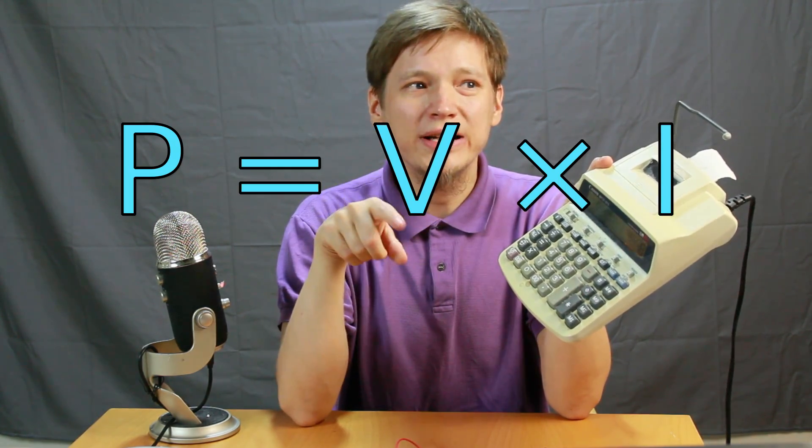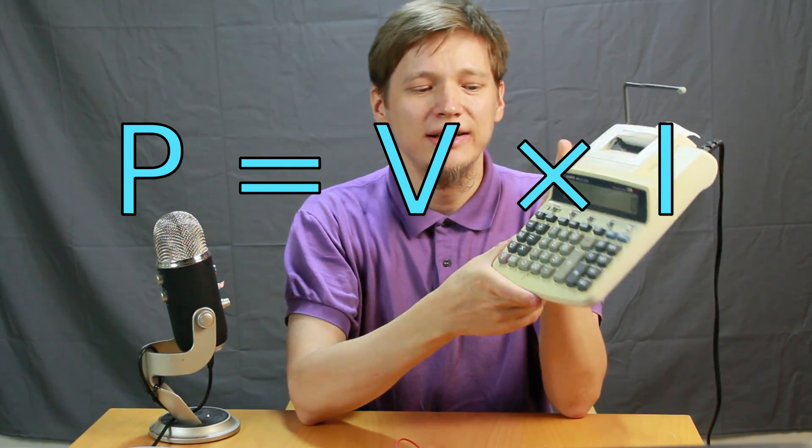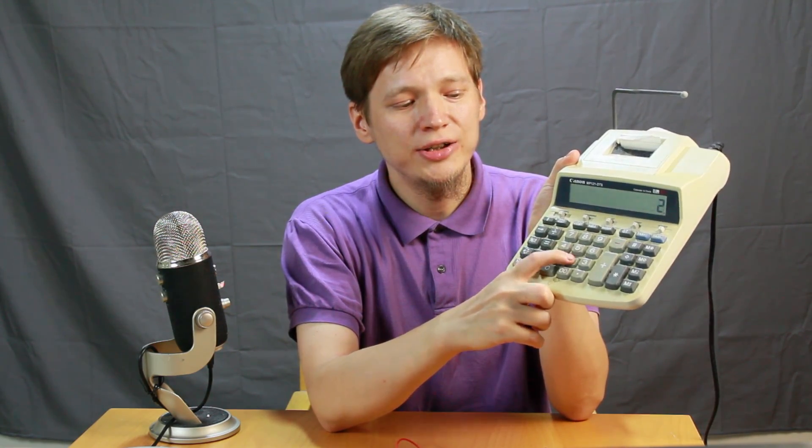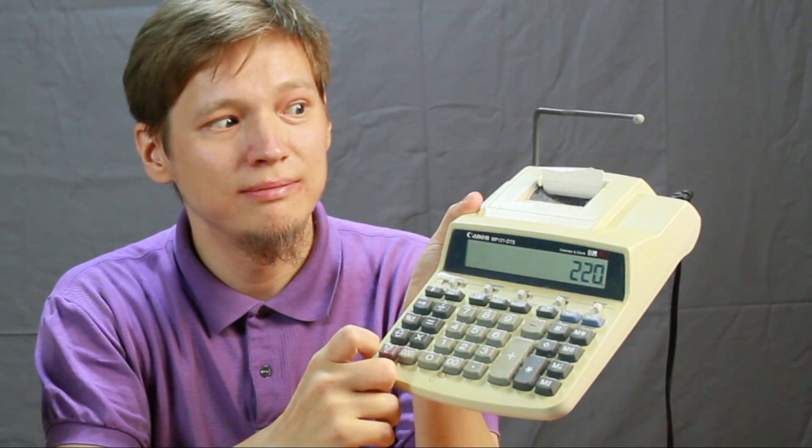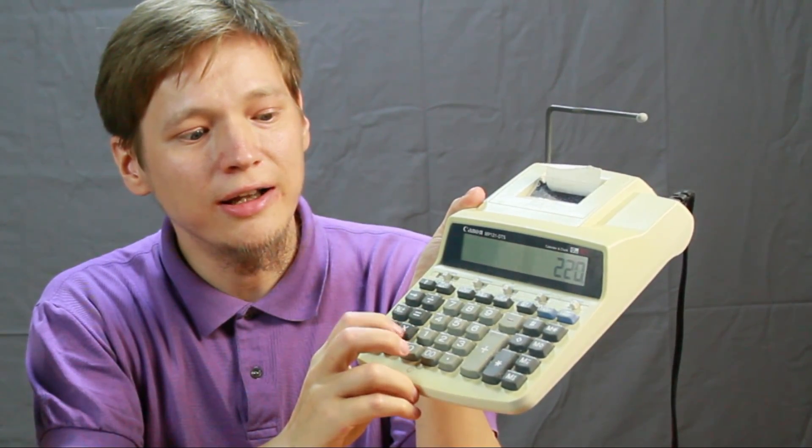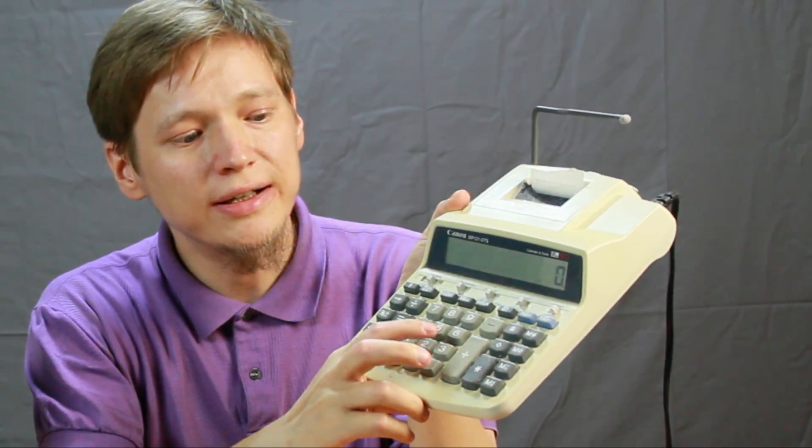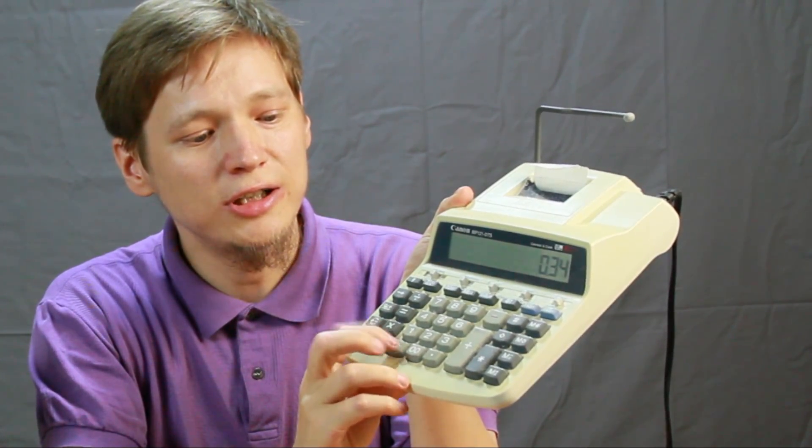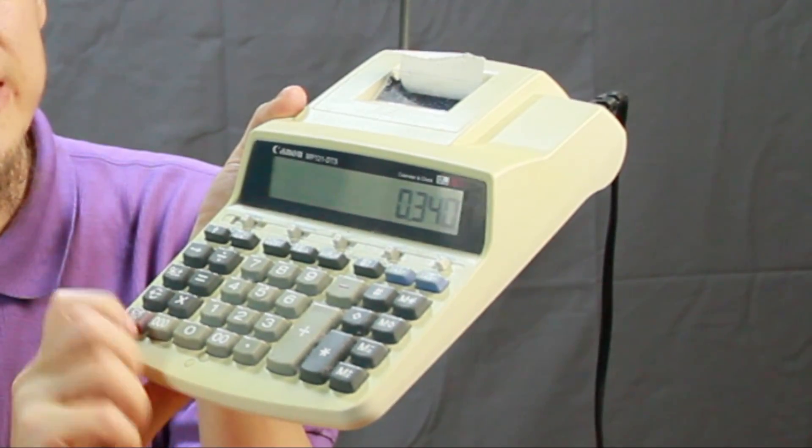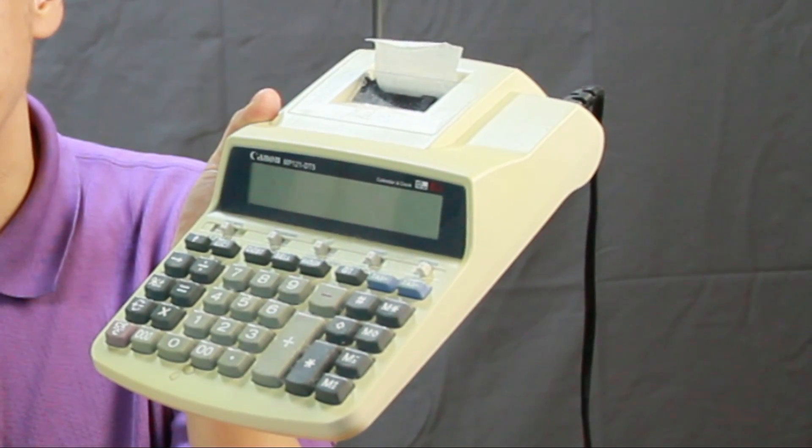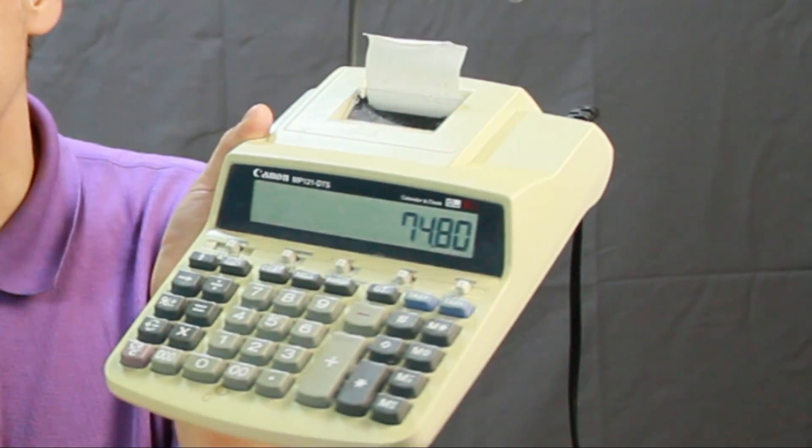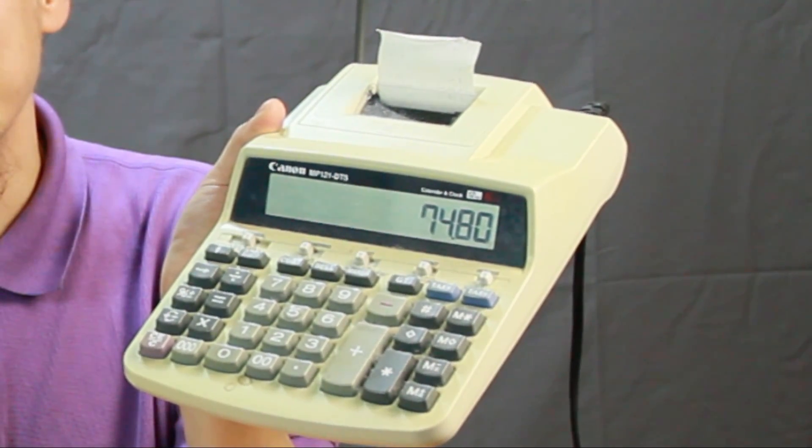If we take the well-known formula for power, which is power equals voltage times current, if we input into our little calculator here, 220 volts times 0.340 amperes, we get this result, which is about 75 watts.